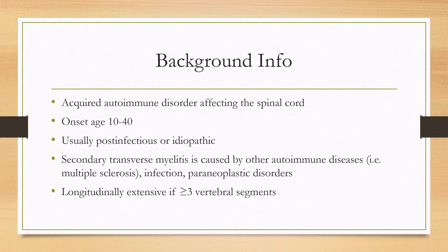If the disease affects three or more vertebral segments, it's called longitudinally extensive disease, and this increases the chance of other secondary transverse myelitises such as paraneoplastic disorders or neuromyelitis optica.